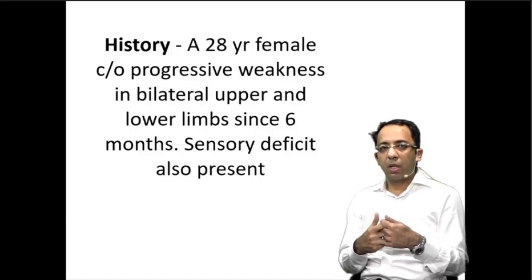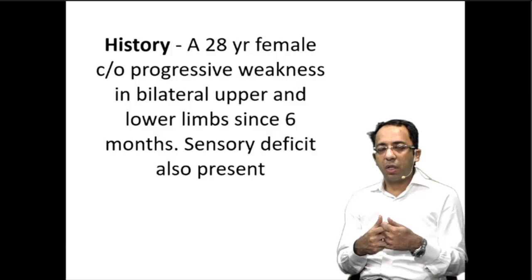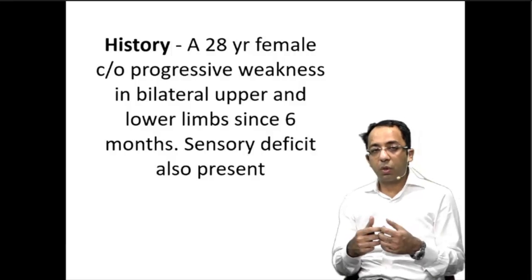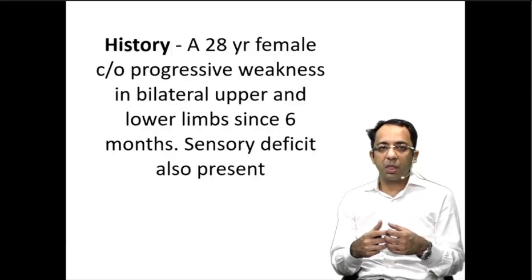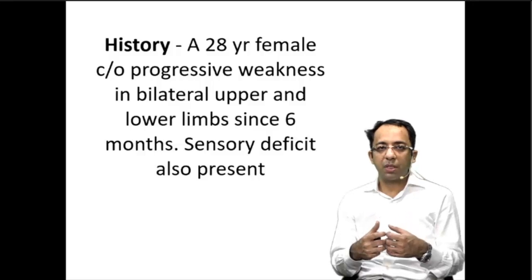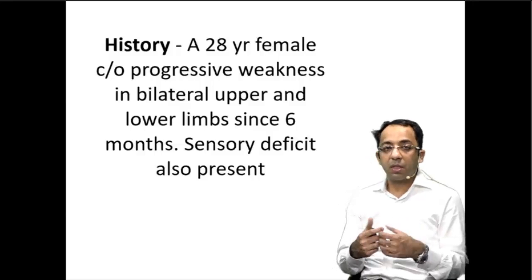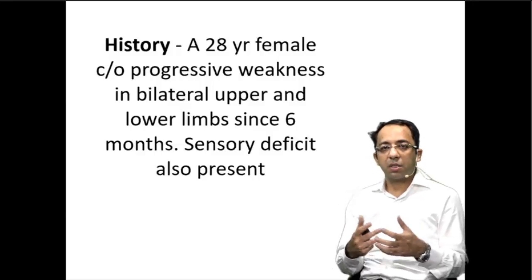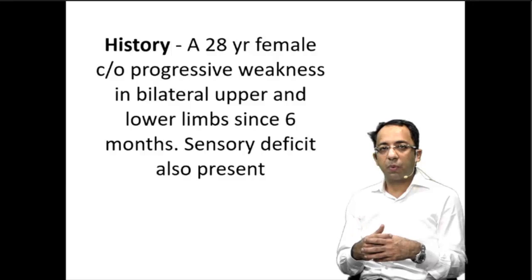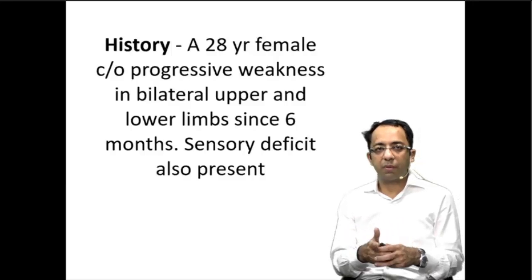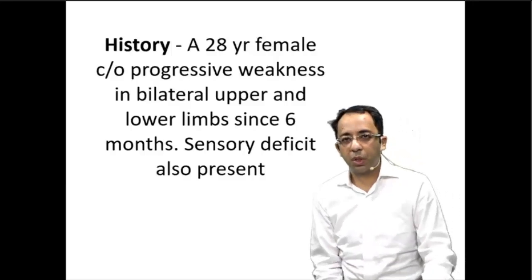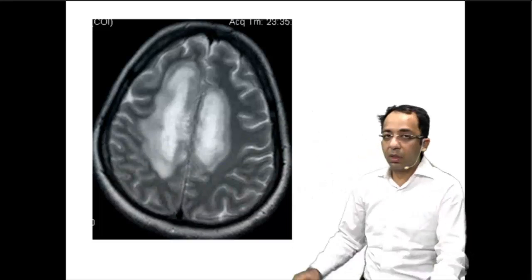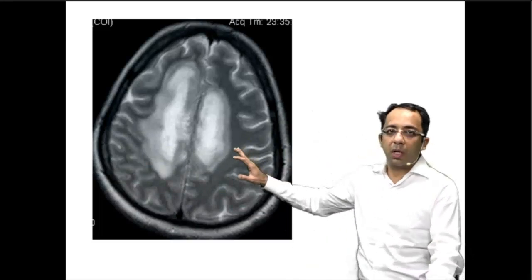You have a 28-year-old female in the question with neurological deficit — upper limb and lower limb weakness since six months — and there is sensory deficit also. That is the kind of complaint you have. Now let's see what you see on the MRI of the patient. Look at the T2 weighted MRI.